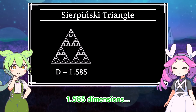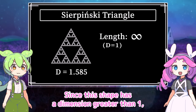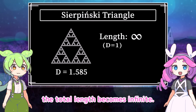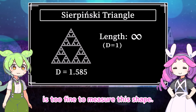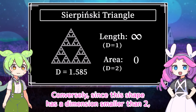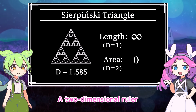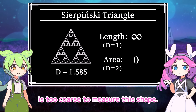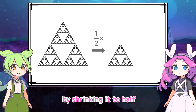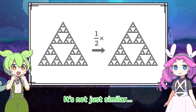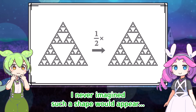1.585 dimensions — hearing it again, it sounds so mysterious. Since this shape has a dimension greater than 1, the total length becomes infinite — a one-dimensional ruler is too fine to measure this shape. Conversely, since this shape has a dimension smaller than 2, its area becomes 0 — a two-dimensional ruler is too coarse to measure this shape. This shape can indeed be restored by shrinking it to half and combining three of them — it completely returns to its original form.